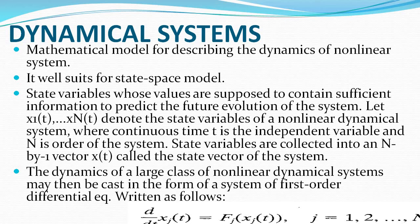State variables are generally denoted as x1 to xN. These are the state variables of the non-linear dynamical system. Continuous time is represented as t, the independent variable. N is the order of the system — how many variables there are. All state variables collected are represented as an N-by-1 vector.